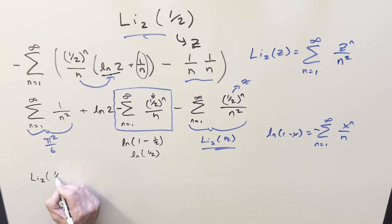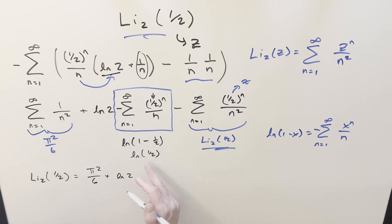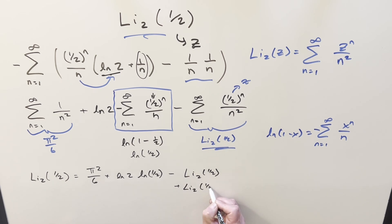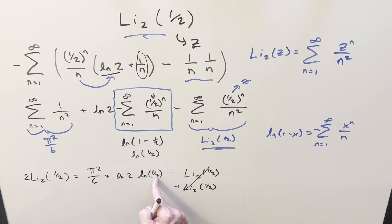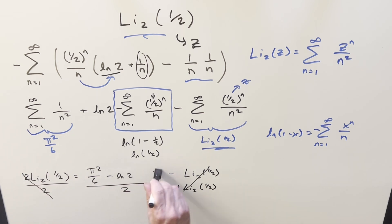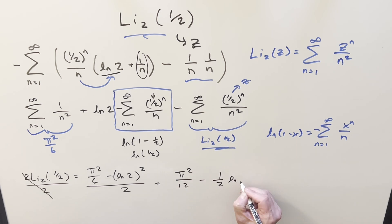Pulling it all together: Li₂(1/2) = π²/6 + ln 2 · ln(1/2) − Li₂(1/2). Adding Li₂(1/2) to both sides gives 2·Li₂(1/2) = π²/6 + ln 2 · ln(1/2). Flipping ln(1/2) to ln 2 introduces a minus sign: 2·Li₂(1/2) = π²/6 − ln 2 · ln 2. Dividing by 2, and combining ln 2 · ln 2 as (ln 2)², the final answer is Li₂(1/2) = π²/12 − (1/2)(ln 2)².